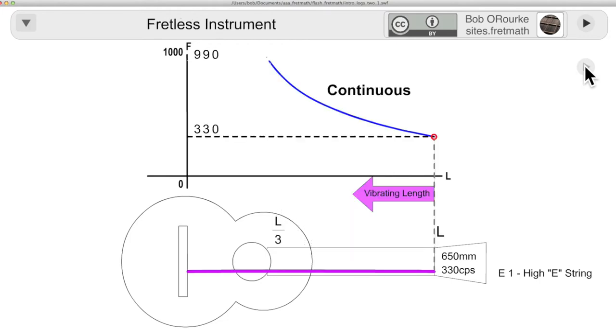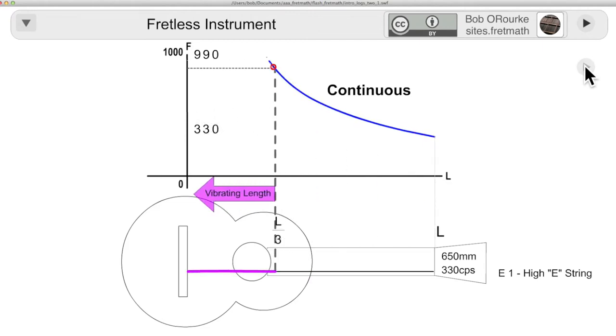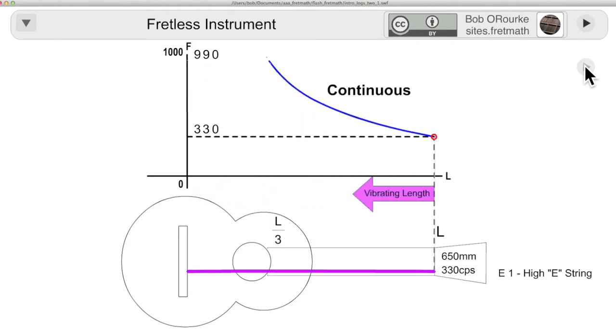Especially when playing with other instruments, you want to be aware of this. Fretless guitarists, singers, and many orchestral instruments can and do play the same note at different frequencies as the musical context requires. Interval sizes can be varied for a smoother sounding melodic line.